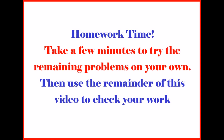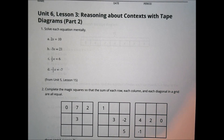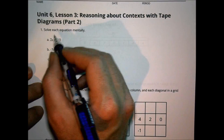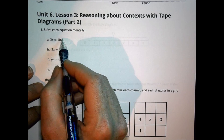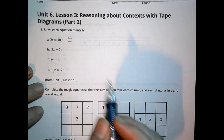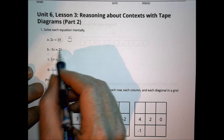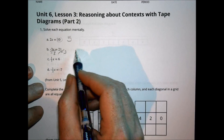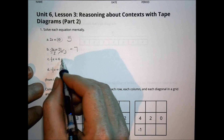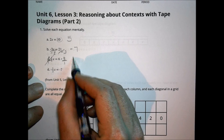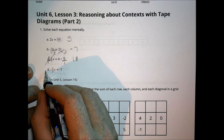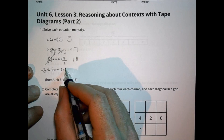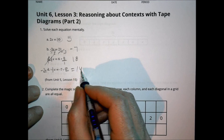For tonight's homework, number 1: solve each equation mentally. For 2x equals 10, divide by 2 to get x equals 5. For negative 3x equals 21, divide both sides by negative 3 to get negative 7. For the next one, multiply by the reciprocal 3 over 1 on both sides; 6 times 3 is 18. For the last one, multiply by the reciprocal negative 2; negative 7 times negative 2 equals 14.